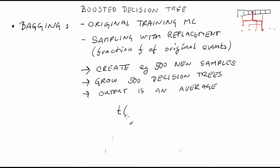The final test statistic is an average of outputs of the different trees. t of x vector equals 1 over sum k going from 1 to n_trees alpha_k, times sum over k going from 1 to n_trees alpha_k times t_k of x vector. We've learned that individual decision trees are sensitive to statistical fluctuations of the training Monte Carlo sample. Bagging is a way how to average the statistical fluctuations out.